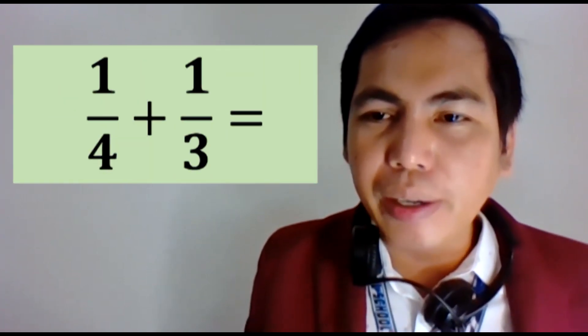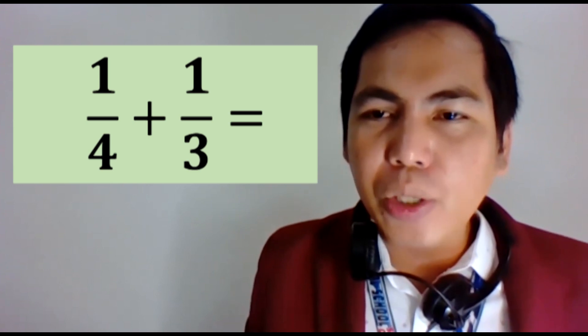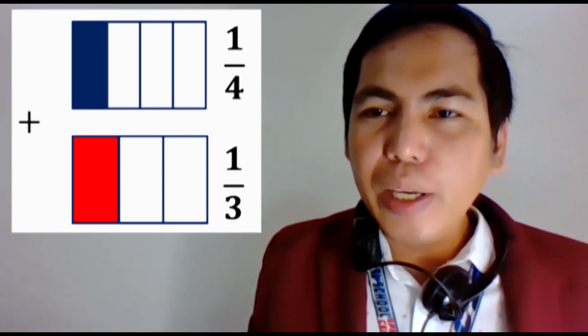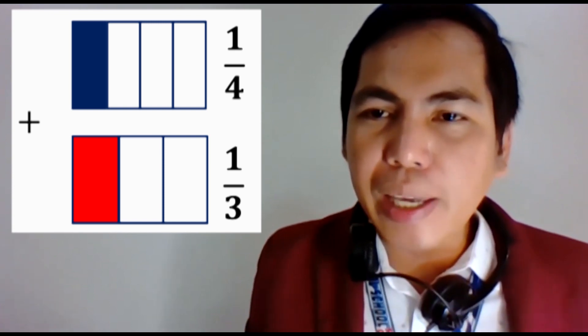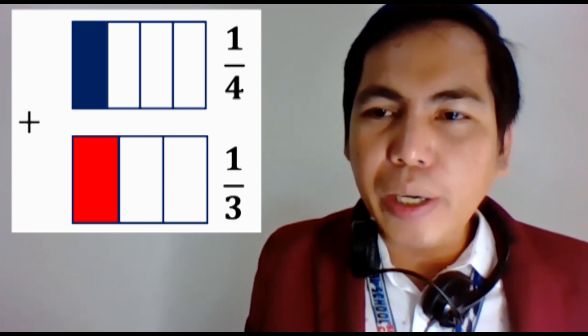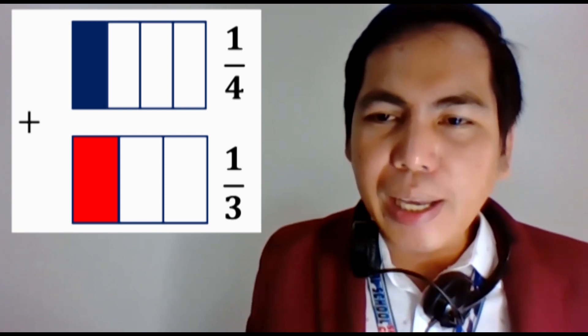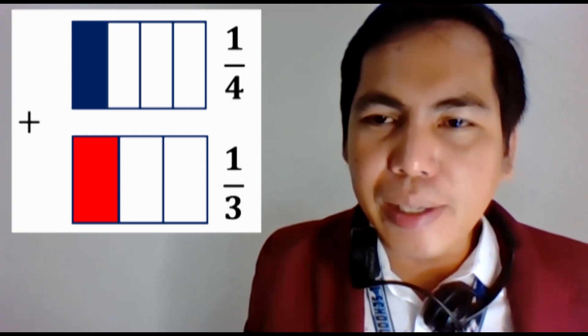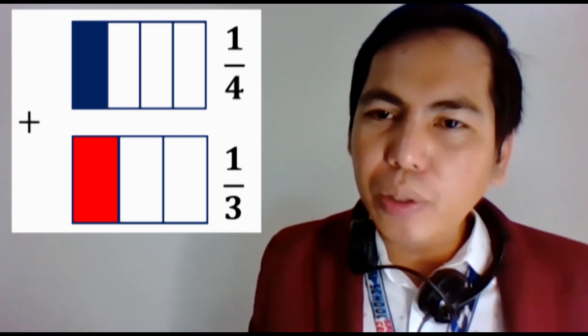What if we want to add or subtract fractions in which the denominators are not the same? For example, we want to add one-fourth and one-third. I am going to show the illustrations for one-fourth and one-third. Looking at the illustrations, we can see that we cannot immediately combine one-fourth and one-third because the sizes of the boxes are not the same. So what are we going to do first?